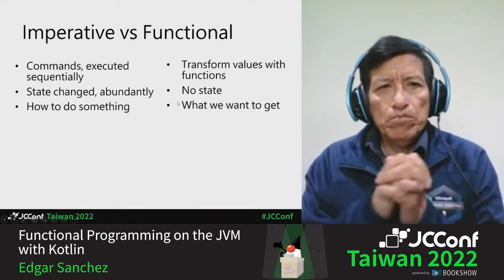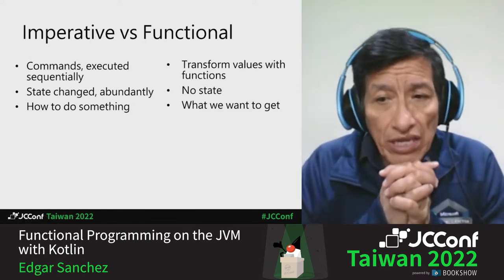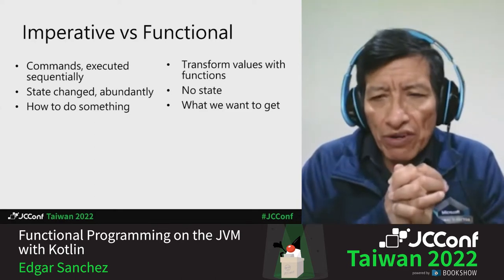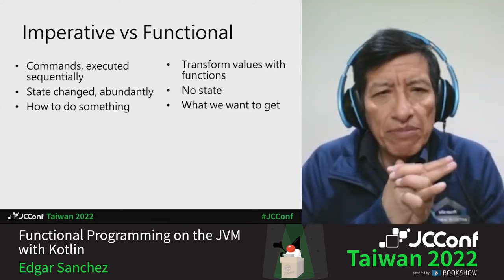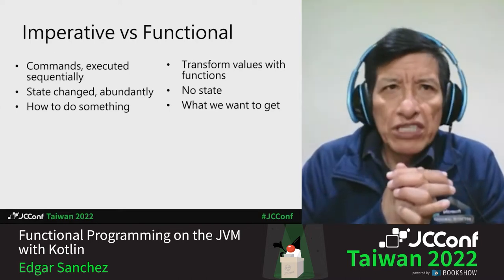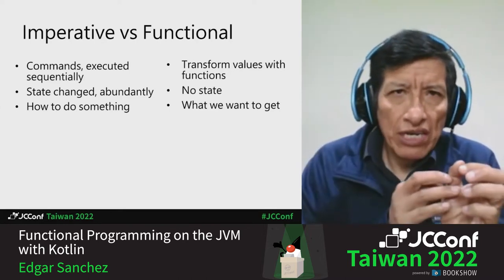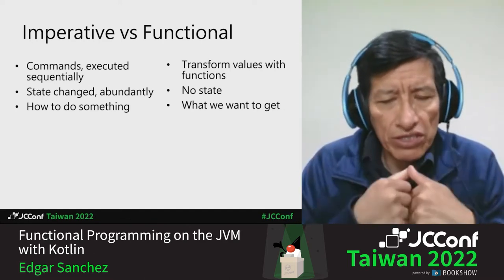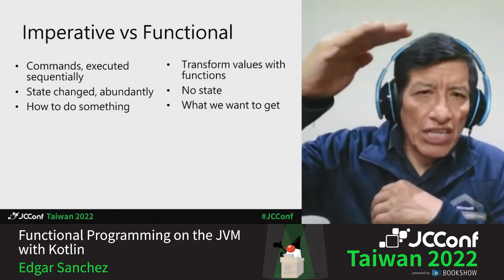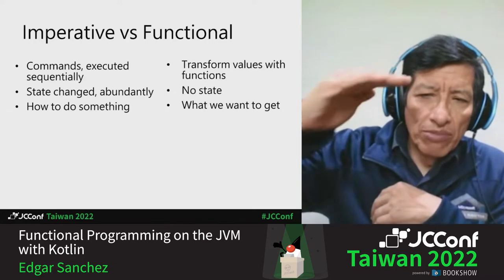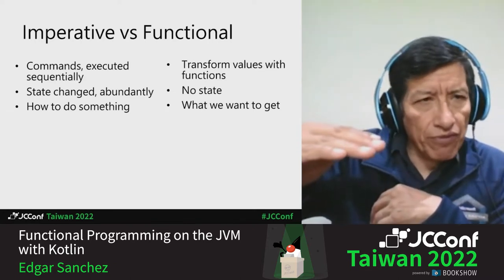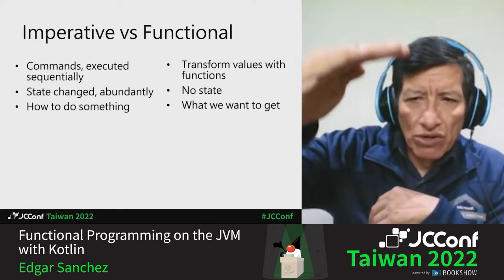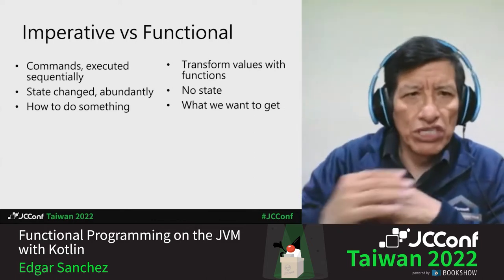Imperative programming, or the imperative paradigm for software development, is based on a couple of ideas. First of all, the idea of commands — commands that you give a machine to be executed. For example, fetch this number from memory, add these two numbers, compare these two quantities, and so on. Mostly you execute sequentially: command one, then command two, then command three, and you can loop back — but most of the time you're going sequentially.